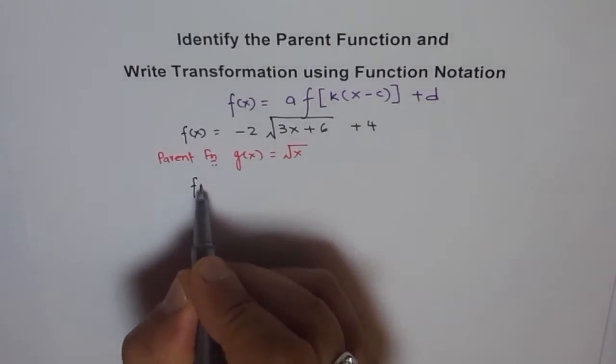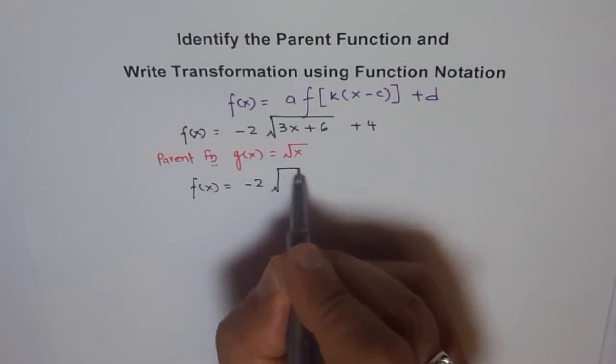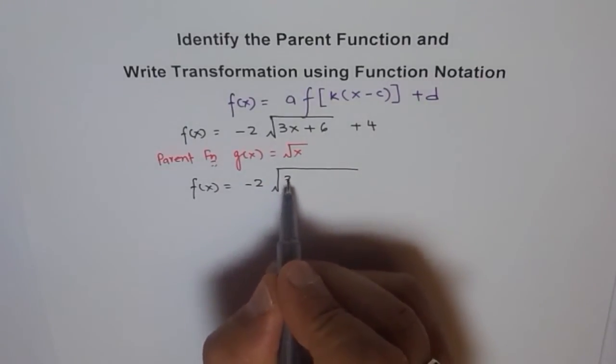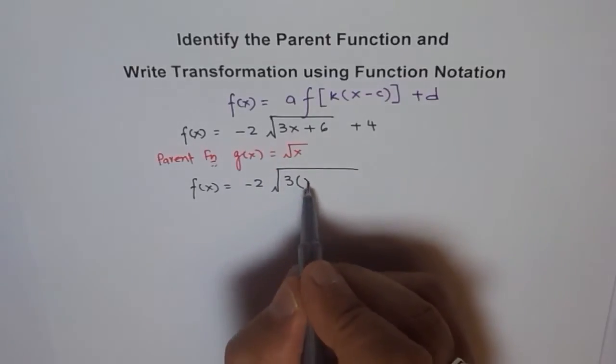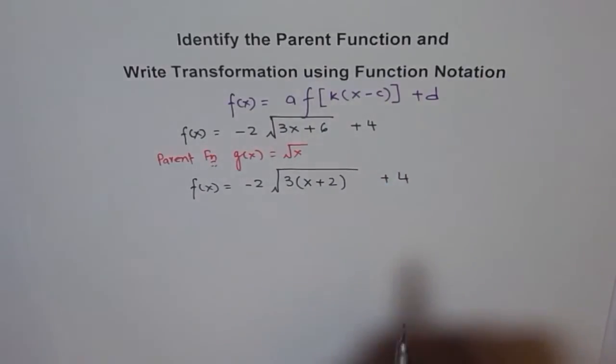So let me write this given equation once again. So I will write this as f of x is equal to minus 2, and we have square root. I will take 3 common, right, and I have got x plus 6 divided by 3, plus 4, right?